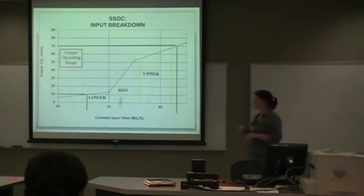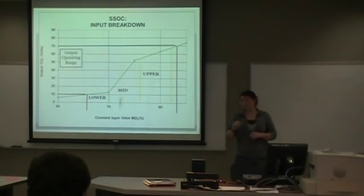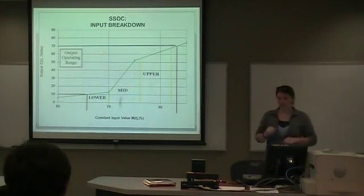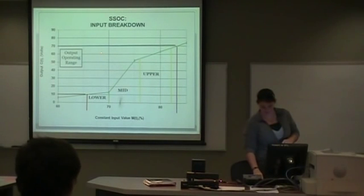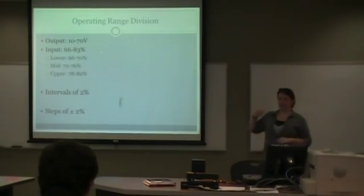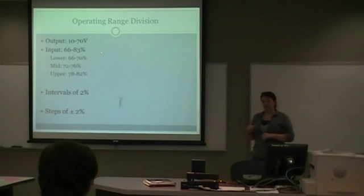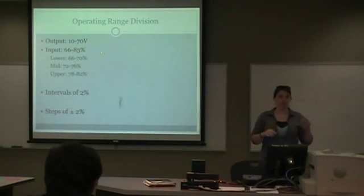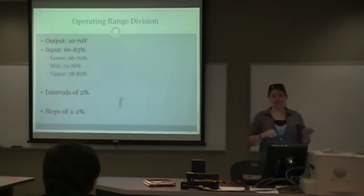Here are the ranges we divided that into: between 66 and 70 input percent for the lower range, the middle range between 70 to 76 percent, and the upper range from 76 to 82 percent. We ran tests at intervals of 2 percent so we would have three separate experiments within each range. For each of those, at each percent, we took steps up 2 percent and then also down 2 percent.